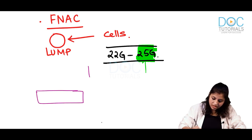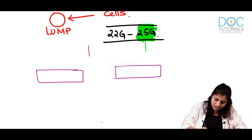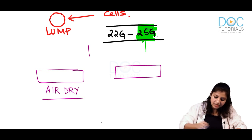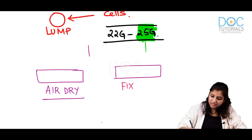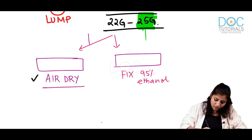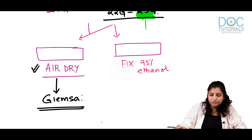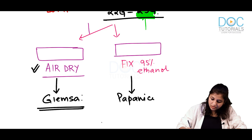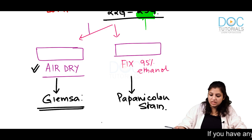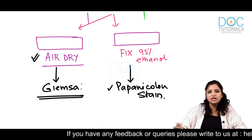Once you have aspirated the cells, immediately spread them on a slide. Two things can then happen: either you leave them for air drying, or you immediately fix them in 95% ethanol. When you leave them for air drying, you usually put Giemsa stain on them. When you fix them with 95% ethanol, you put Papanicolaou stain on them.